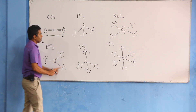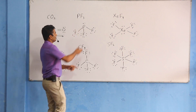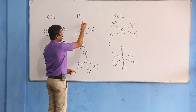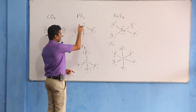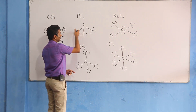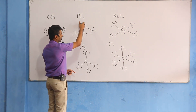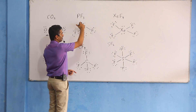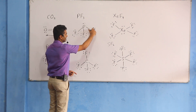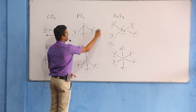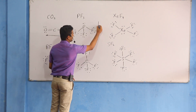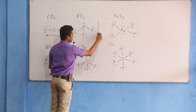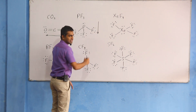PF3 is called phosphorus fluoride, phosphorus fluoride, phosphorus fluoride. So it's also called PF3 to be a split bond.